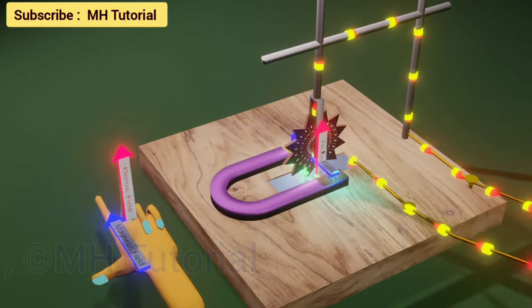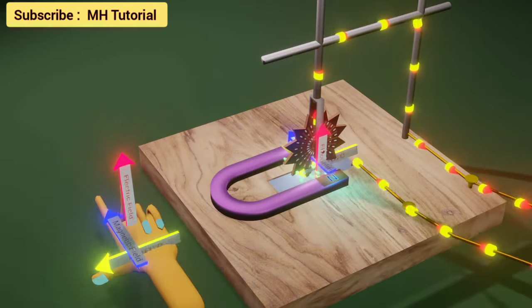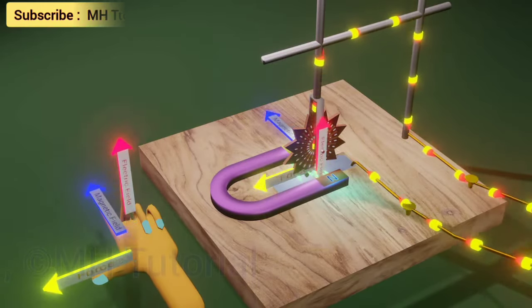According to Fleming's left-hand rule, the resultant force should act along the thumb. These yellow arrows are in the direction of the force.